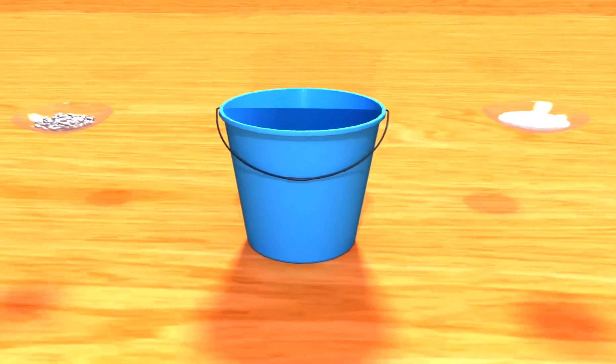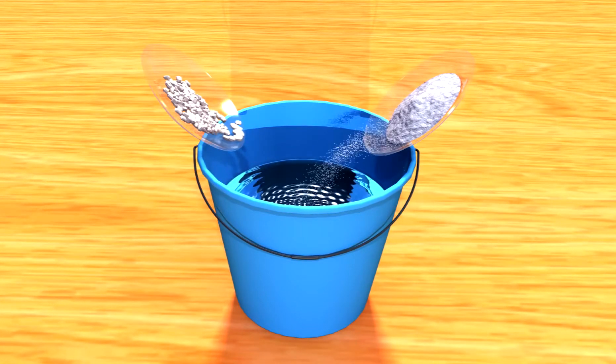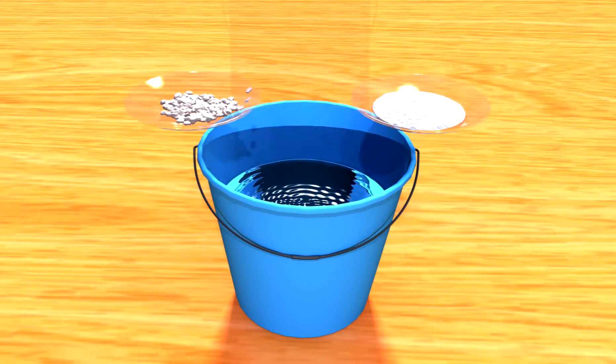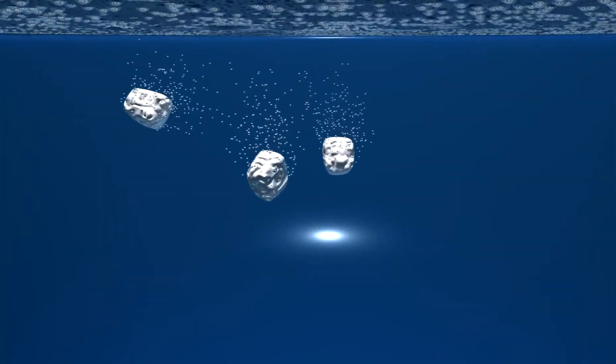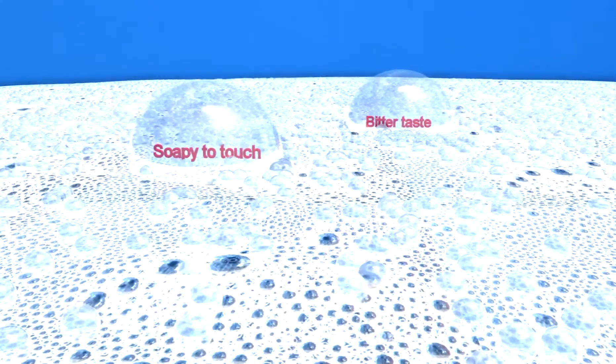For example, washing soda and caustic soda are the bases which have bitter taste and soapy to touch.